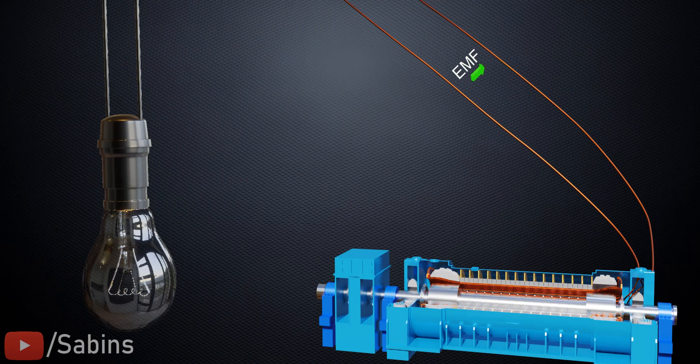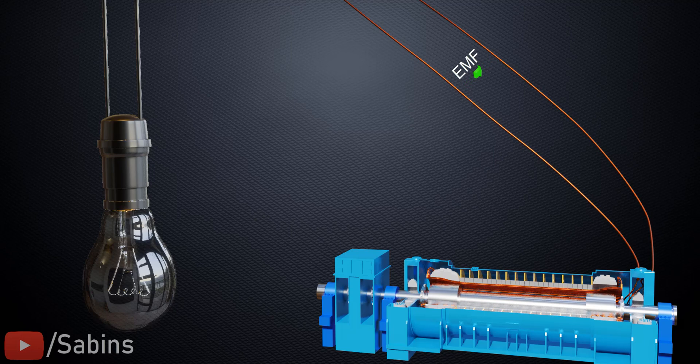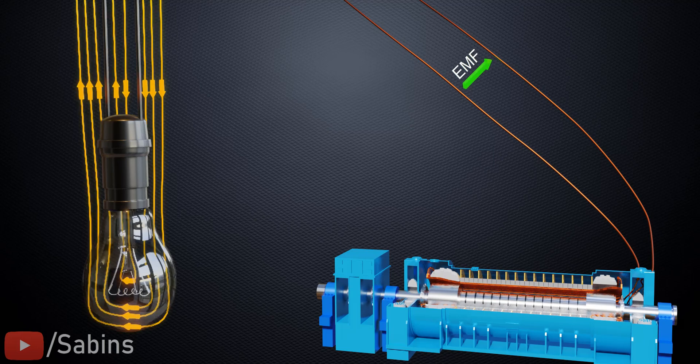But remember that a power plant produces an alternating EMF, or an alternating electric field, which means that the electric field which passes through the bulb filament will also fluctuate, as shown.